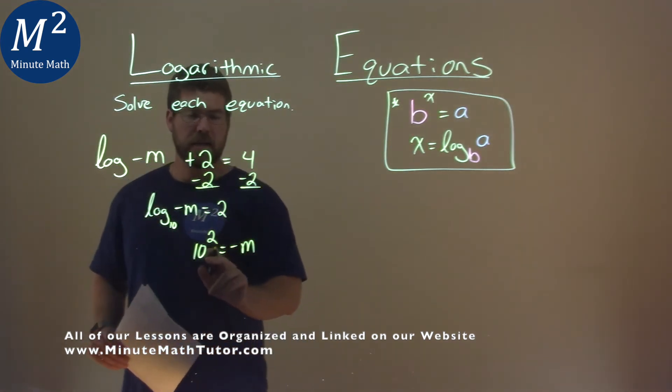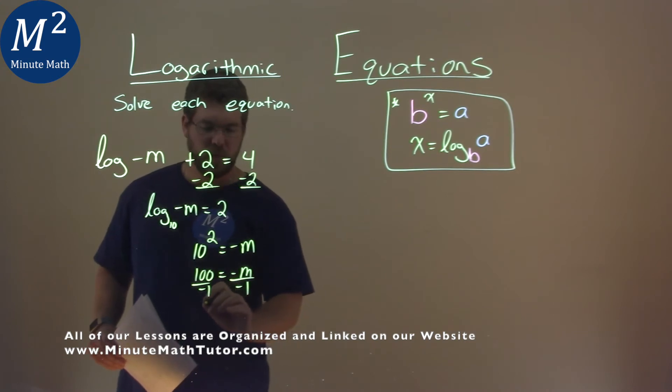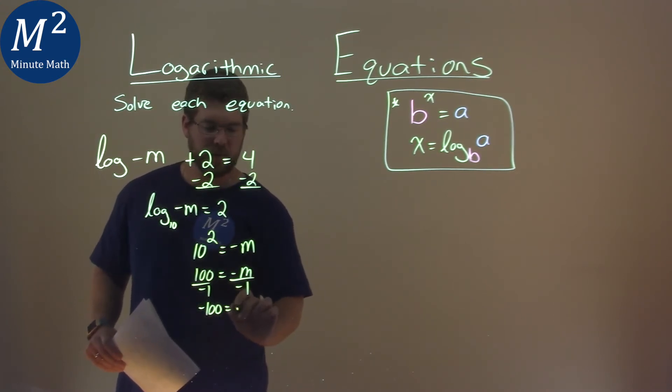Not too bad. 10 squared is 100, equals negative m. Divide both sides by negative 1, and we have negative 100 equals m here.